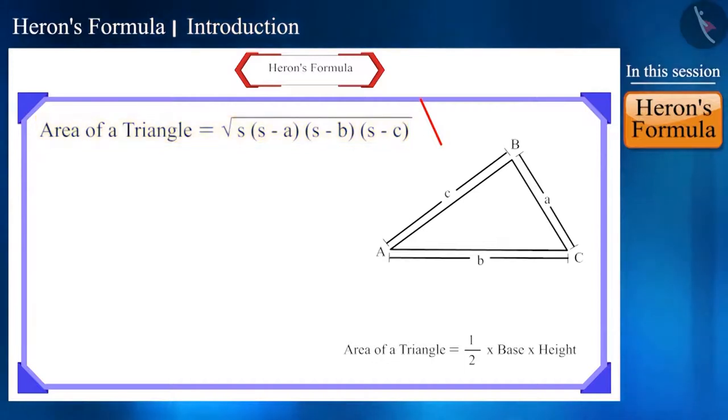The difference between the two formulas is that area of a triangle equals half into base into height can only be used when we have information about both the base and the height of the triangle.